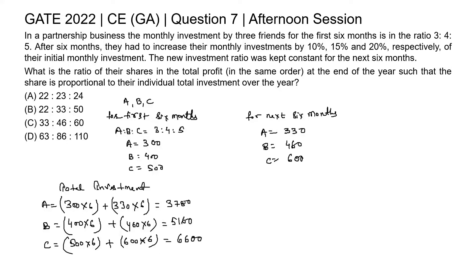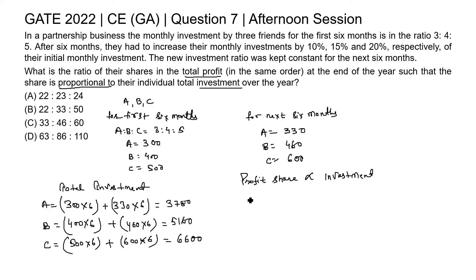The total investment of C is 6600. In the question, the profit share is proportional to the individual total investment. So the ratio of profit shares of A, B, C is proportional to their total investments. We can write the ratio as 3780 : 5160 : 6600.